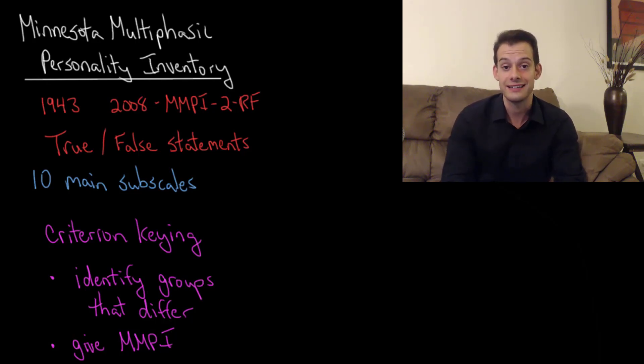There's even a section designed to catch faking, something I mentioned in a previous video. Now an interesting thing about the way the MMPI is used is that it uses a technique called Criterion Keying. Rather than thinking about the ways that people differ and then trying to design an assessment that will capture those differences, it essentially does this in reverse.